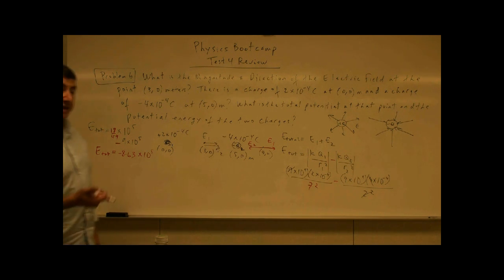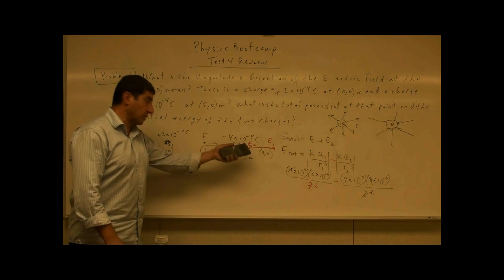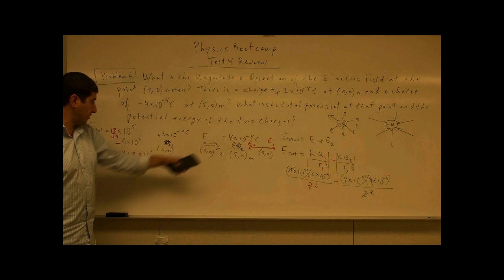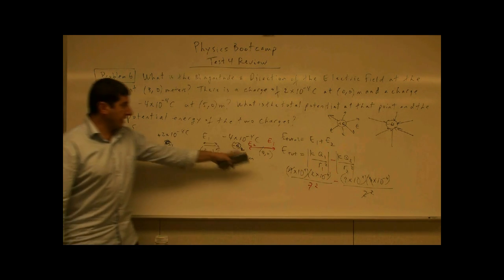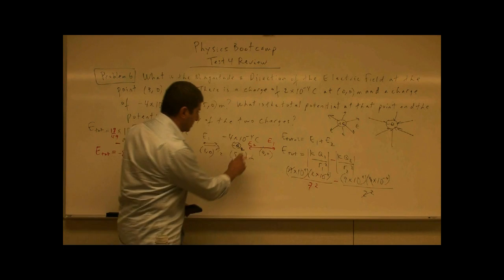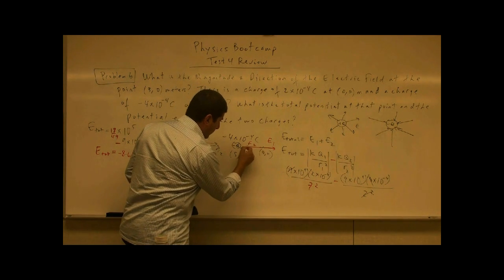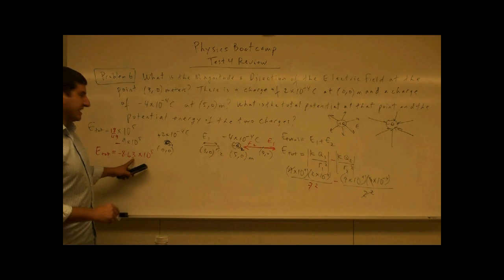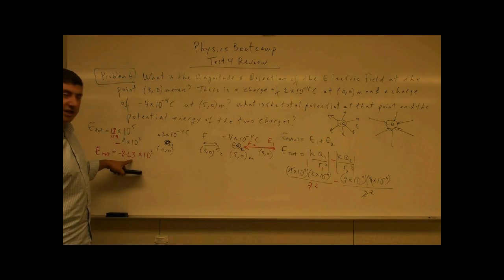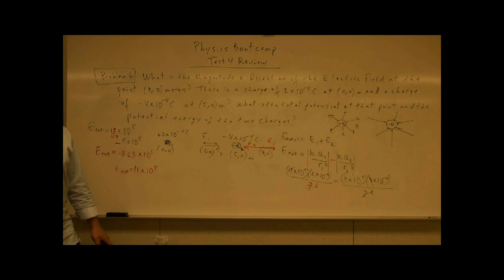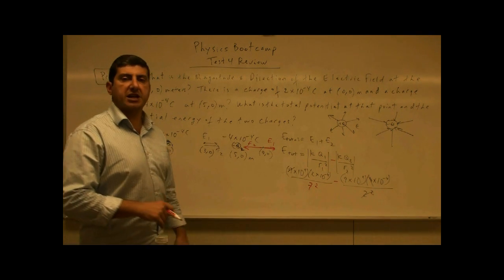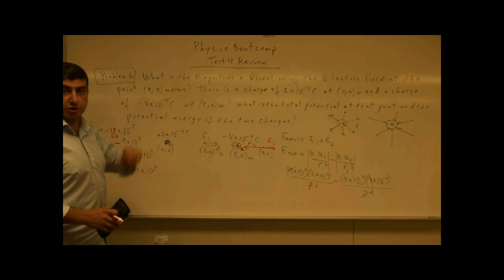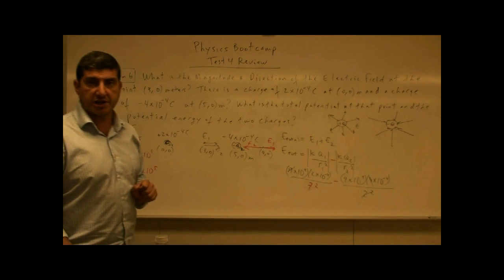The electric field in the middle was really strong — 11 times 10 to the 5th. On the right at 7, 0, the two fields kind of cancel each other. The negative charge's field wins because the positive charge's contribution is weaker at that distance. You can see how you have to take care of those directions — whether you're between the charges, to the right, or on the other side — and you can try different variations of that problem.